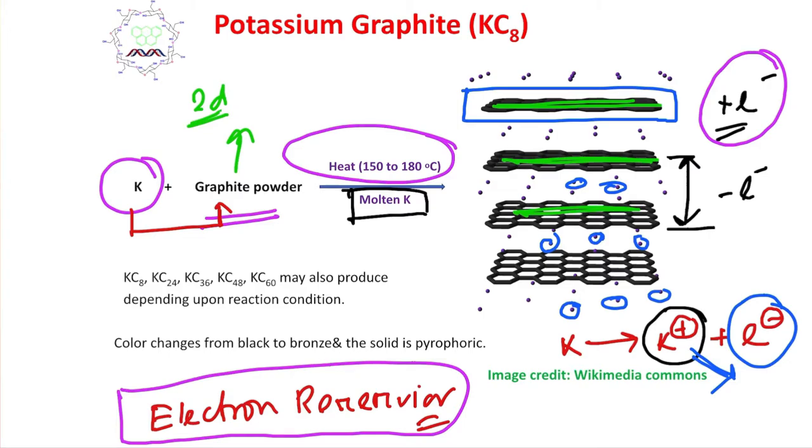Such kind of intercalated lithium species is used in lithium ion batteries. That's a different chemistry, but similar phenomena. In this case, potassium is between the layers of graphite in the K plus form. Potassium has given electrons to graphite.